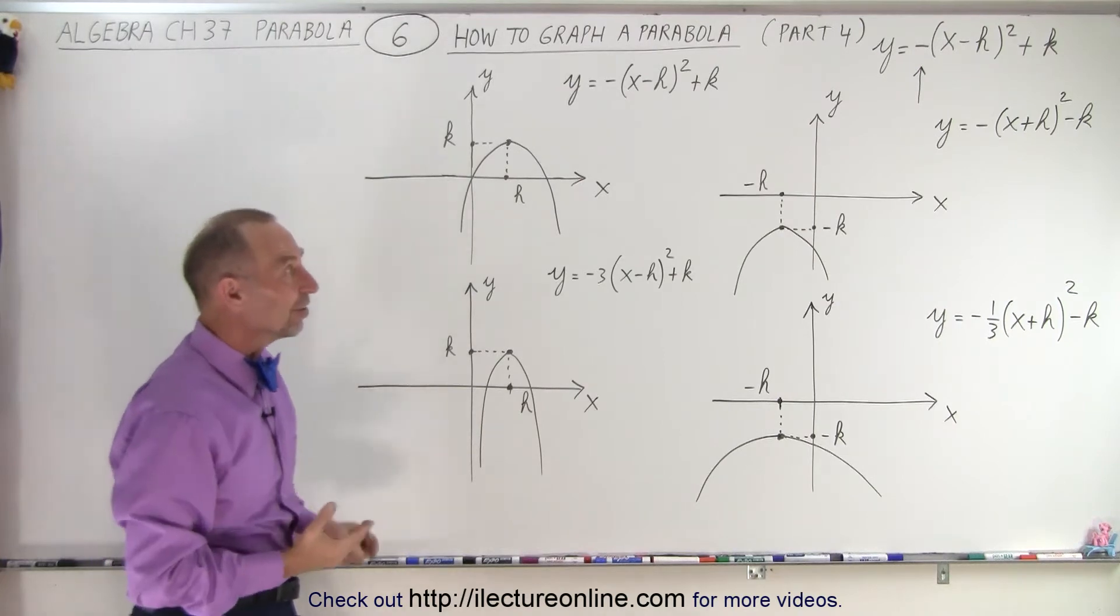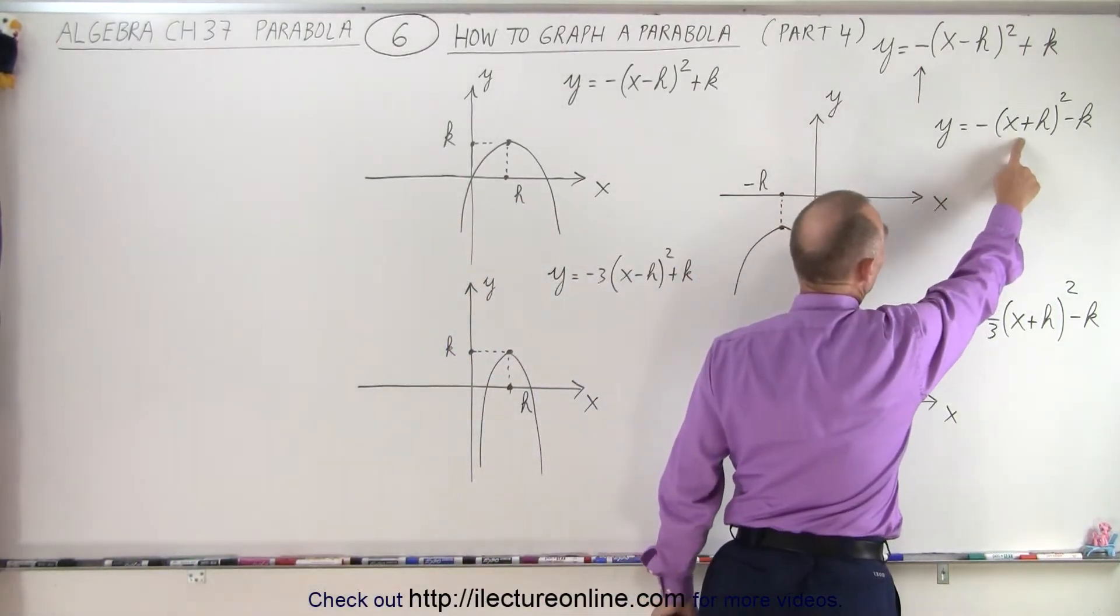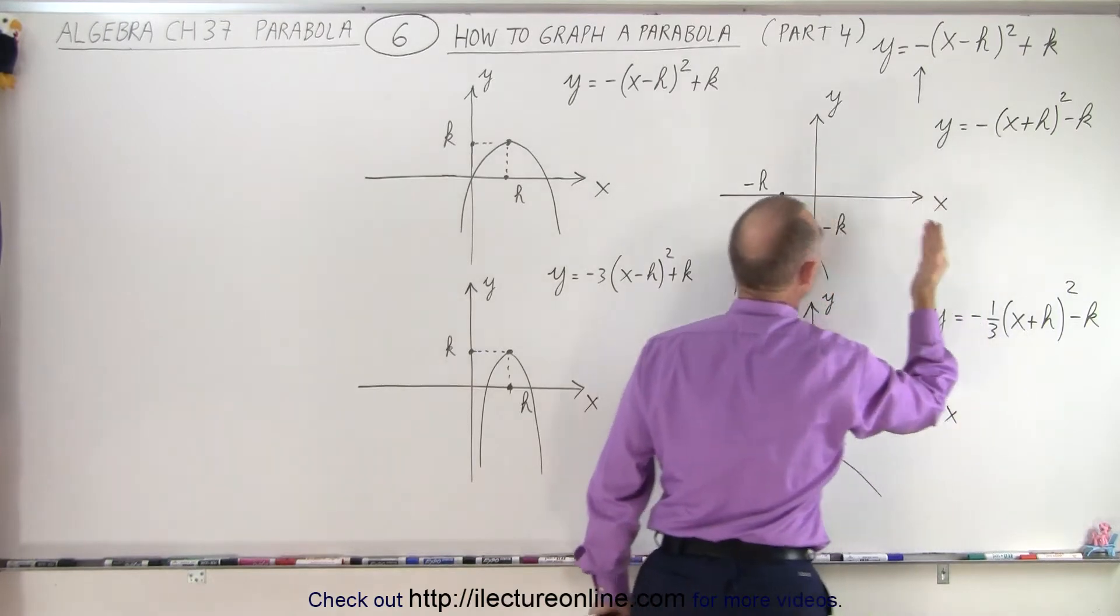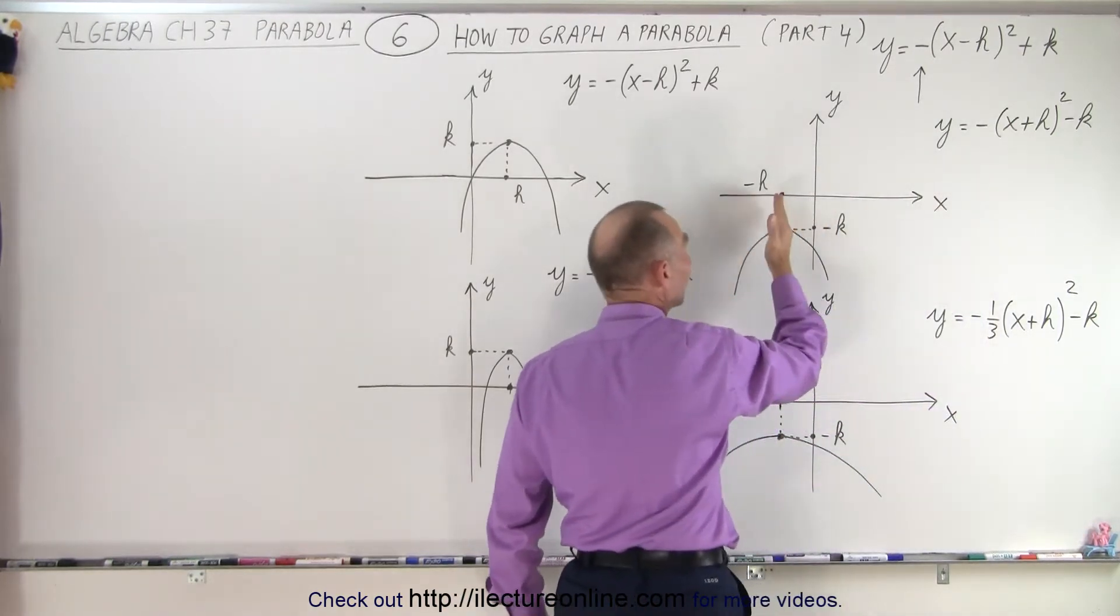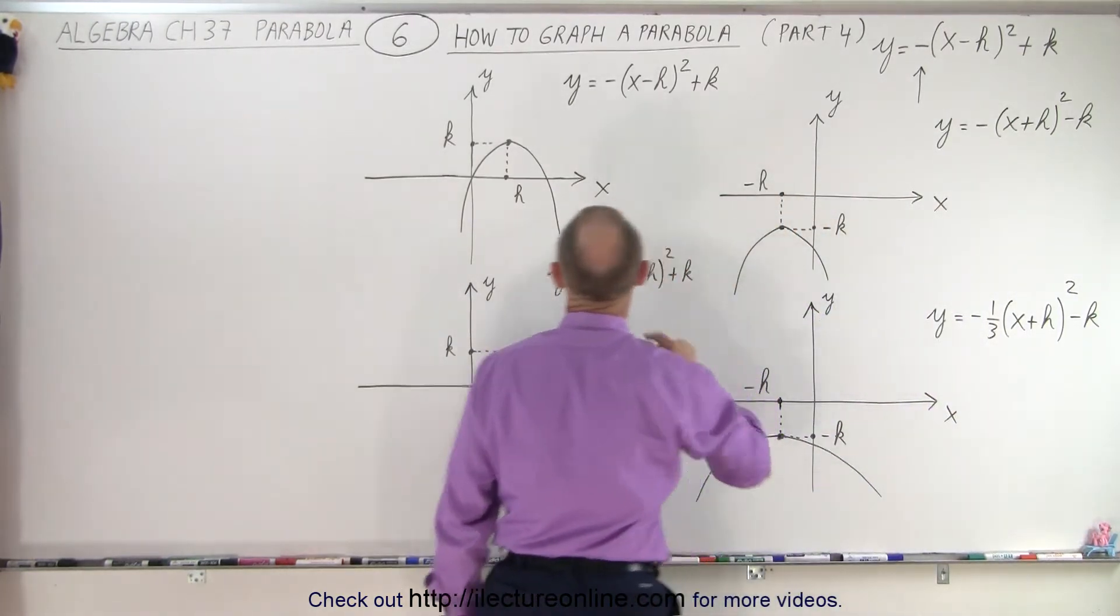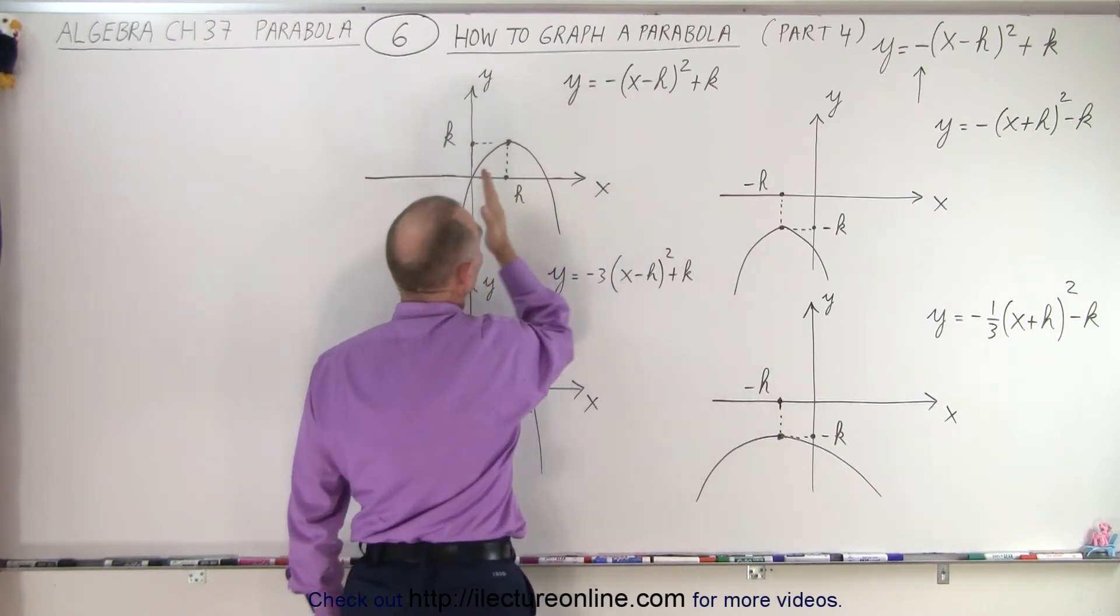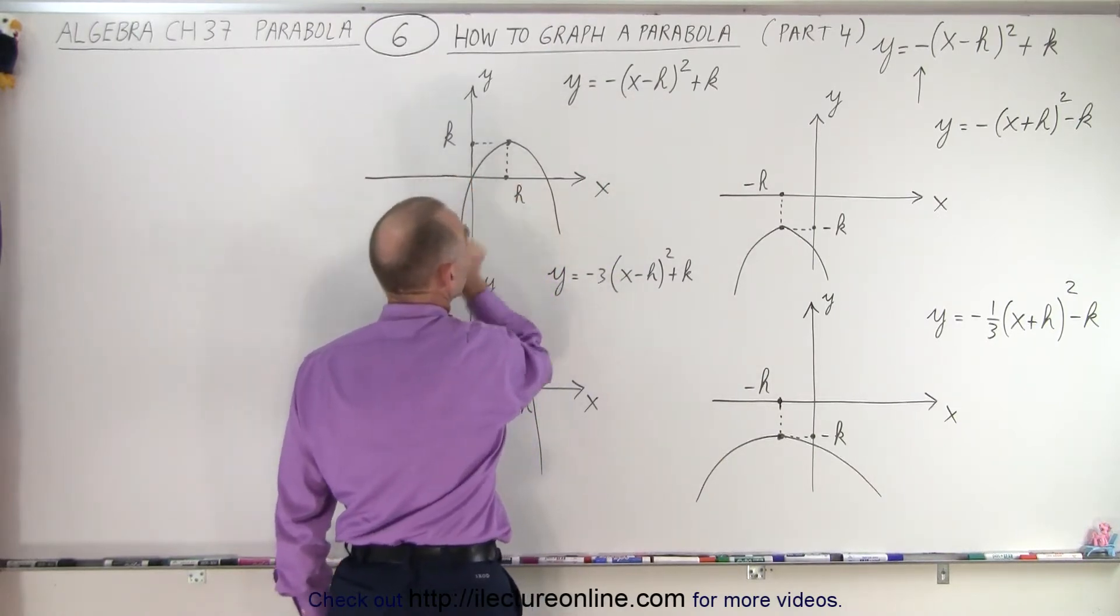So everything is still the same. We still have H and K. In this case, we have plus H, which means that the parabola moves to the left a distance H. And in here, we have minus H, which means the parabola moves to the right a distance H.